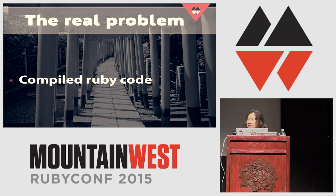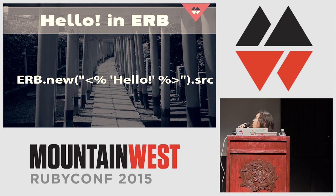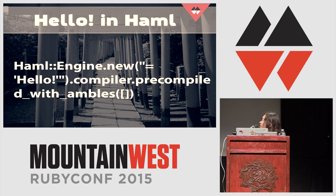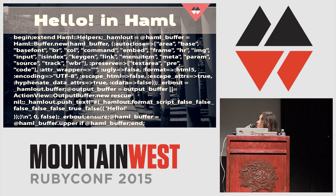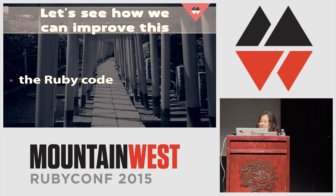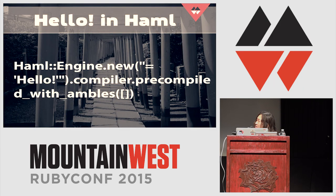Still, Haml was slow. For example, if you compile an ERB template that just says "hello," it compiles into a simple Ruby statement: puts "hello." But if you do the same thing with Haml, Haml compiles that code into a huge amount of Ruby code, which is apparently very slow. We have to improve the generated Ruby code to be much leaner.